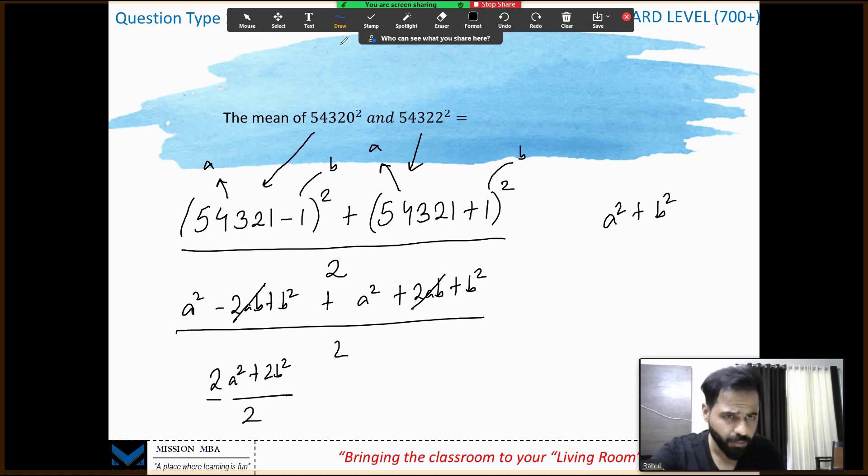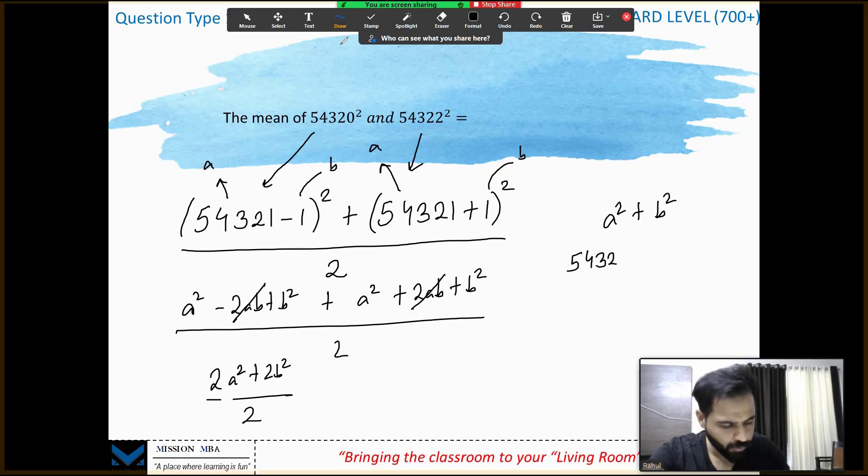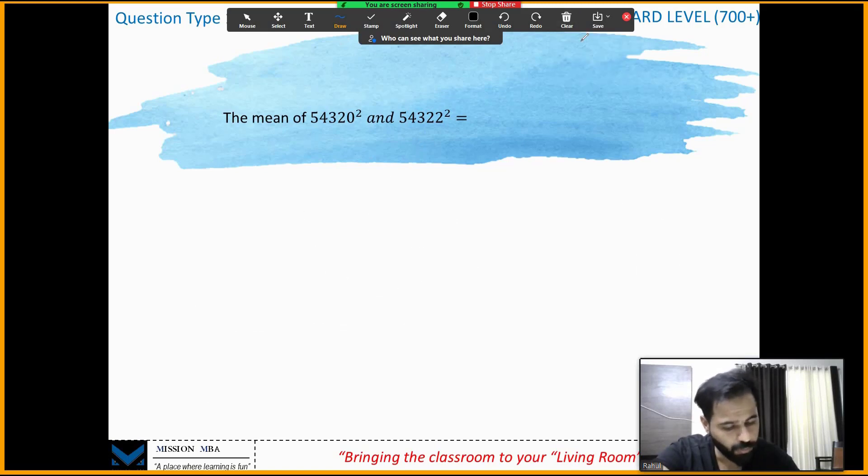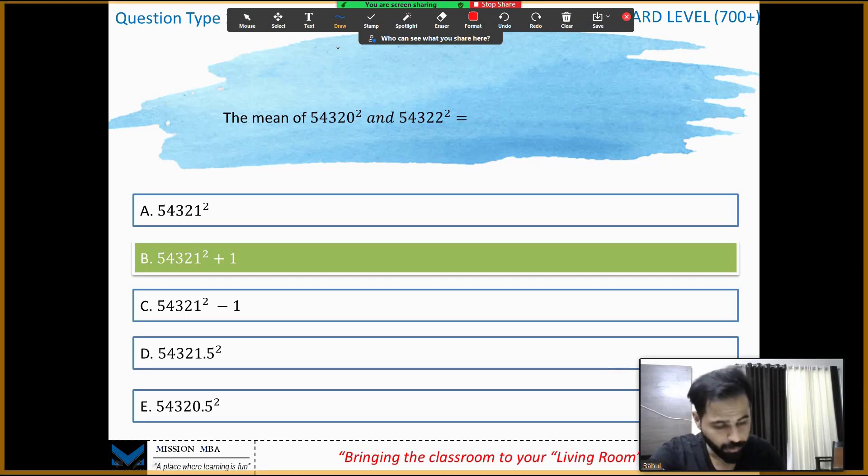Here's your answer. What was your a? 54321. Plus what's b? 1. 1² is 1. That's the answer, simple. You are done. Now you might think, how would we think that we have to write it in that format? With the help of little practice, and I've already told you, the answer or the hint lies in the option choices as well.